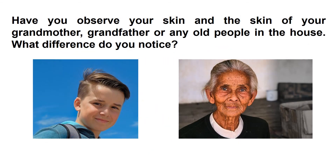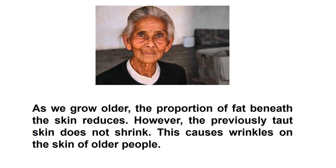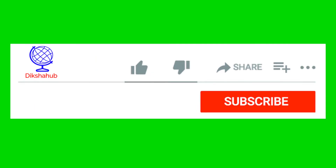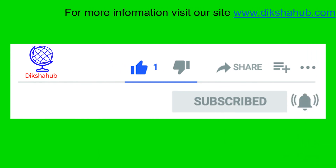Have you observed your skin and the skin of your grandmother, grandfather, or any old people in the house? What difference do you notice? As we grow older, the proportion of fat beneath the skin reduces. However, the previously taut skin does not shrink. This causes wrinkles on the skin of older people. Thank you for watching this video. Keep learning and keep sharing. Bye!